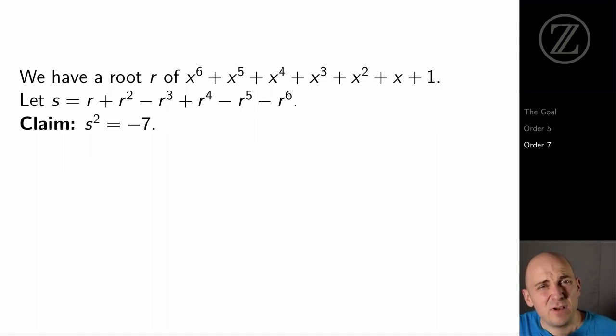So let's suppose that r is that element of order 7. And I'm going to build another element s. I'm going to define s to be r plus r squared minus r to the 3rd plus r to the 4th minus r to the 5th minus r to the 6th. And my claim is that s squared is negative 7. I'm claiming that I can build an element which is the square root, a squared root, of minus 7.